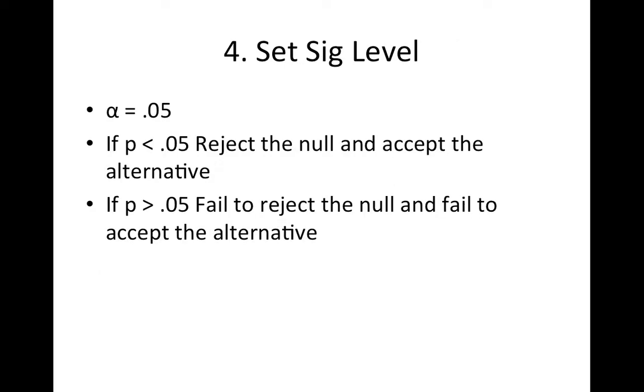In step four, we're going to set a significance level. Like good psychologists, we'll set our alpha at 0.05 and we'll state our decision rules like we always do. If p is less than 0.05, we're going to reject the null and accept the alternative. If p is greater than 0.05, we're going to fail to reject the null and fail to accept the alternative.